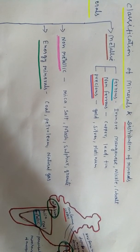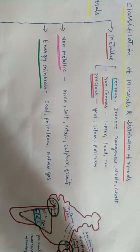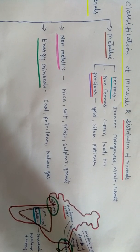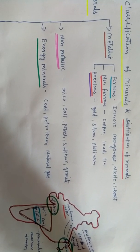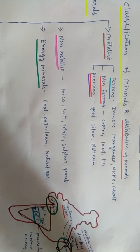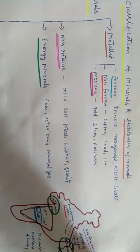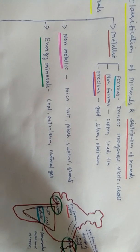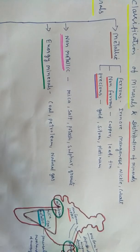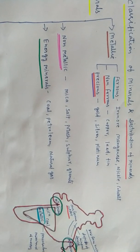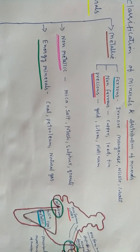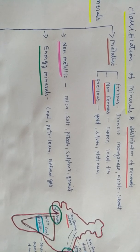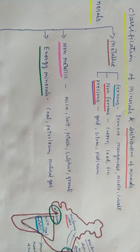Non-metallic minerals do not have any kind of metallic brightness or ductility. The third category is energy minerals, such as coal, petroleum, and natural gas. These minerals have the potential to produce energy and are very important for running machinery, industries, and many other things.